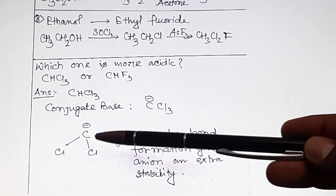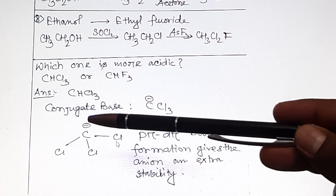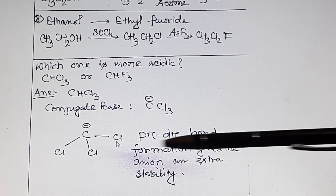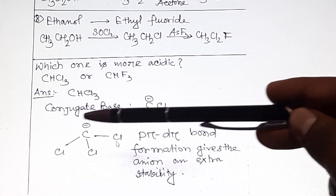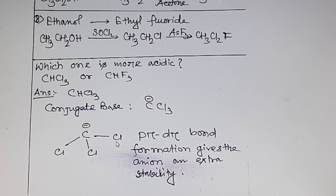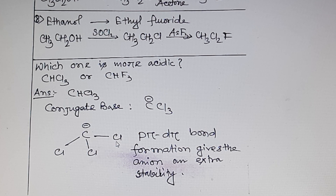The lone pair on the CCl₃⁻ anion undergoes resonance with the vacant d-orbitals of chlorine, forming a p-π–d-π bond — so CCl₃⁻ is stabilized through resonance. But CF₃⁻ gains stability only through the −I effect of fluorine, not resonance. Therefore, CCl₃⁻ is more stable than CF₃⁻, meaning CHCl₃ is more acidic than CHF₃.